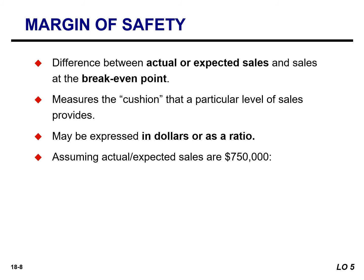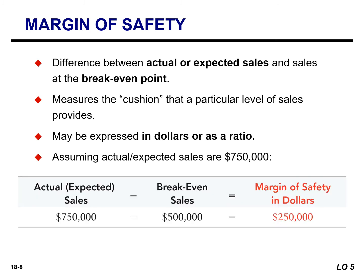If we assume that our actual or expected sales are $750,000, we would calculate our margin of safety in dollars by simply taking our actual or expected sales and subtracting our break-even sales. So Vargo's margin of safety is $250,000. Its sales could fall $250,000 before it would operate at a loss.